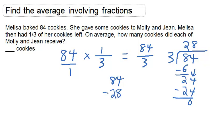So if we subtract the 84 that there were to begin with by the 28 that were left after Molly and Jean, we can figure out how many cookies Molly and Jean had.